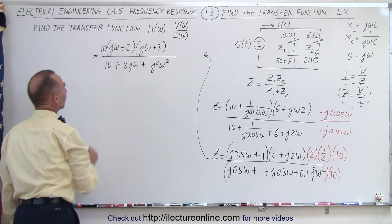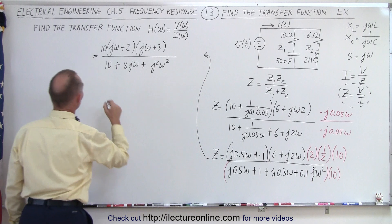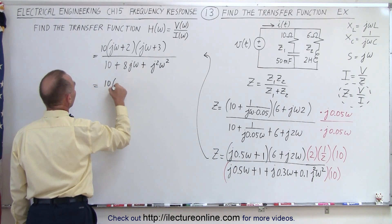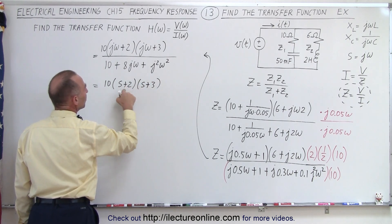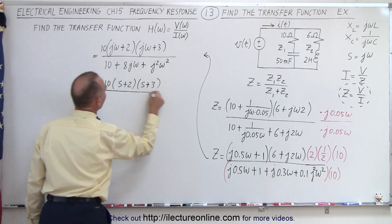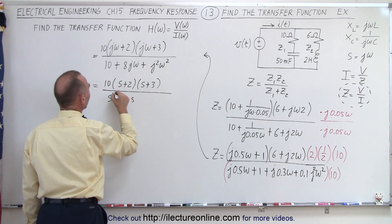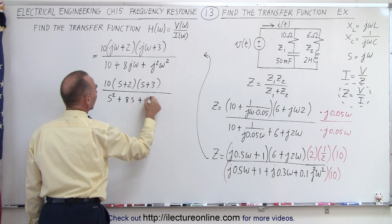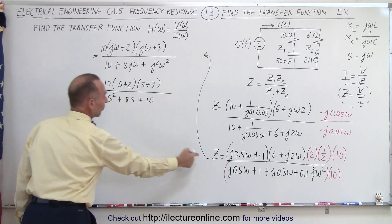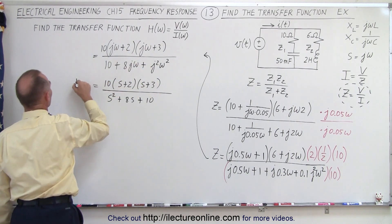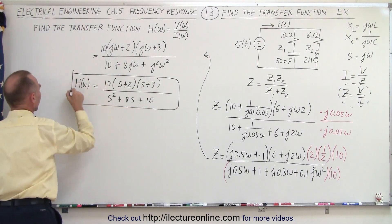Now, I'm making the conversion where S equals J omega. When I do that, I get the following. So, this is equal to 10 times S plus 2 times S plus 3, which gives me the zeros in the numerator, divided by S squared plus 8 times S plus 10, which will give me the poles in the denominator. And so, this, since this is equal to Z, that becomes the transfer function, H of omega. And that is what we were looking for.